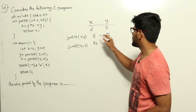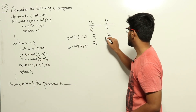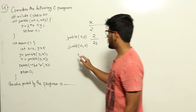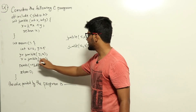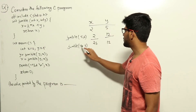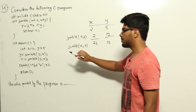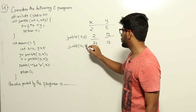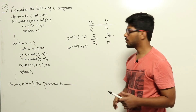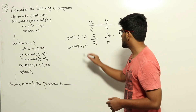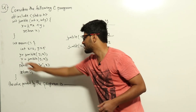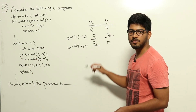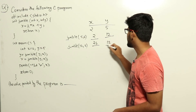After that, we call jumble of y comma x again, meaning we are calling jumble(12, 2). That returns 12 into 2 plus 2, that is 24 plus 2, which is 26. That is assigned to x, meaning x becomes 26 and y remains at 12.